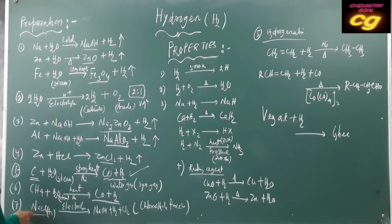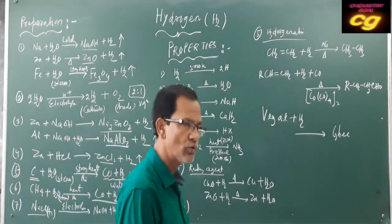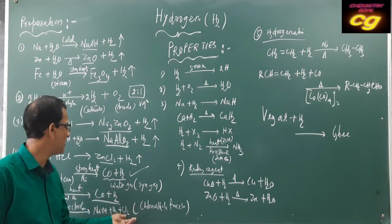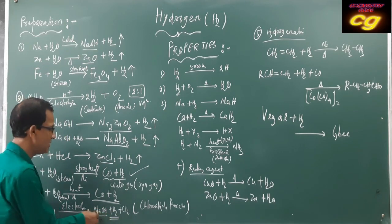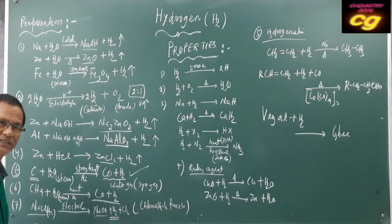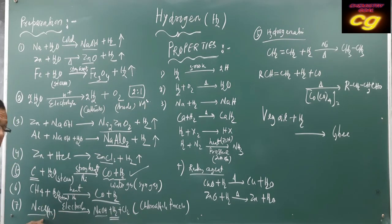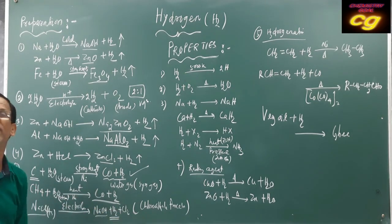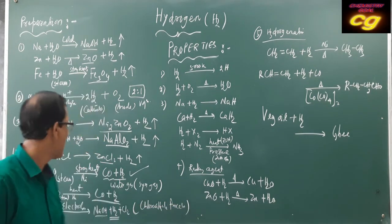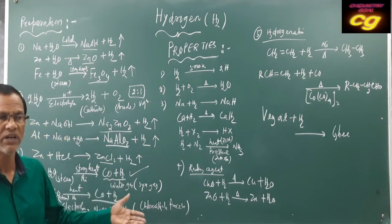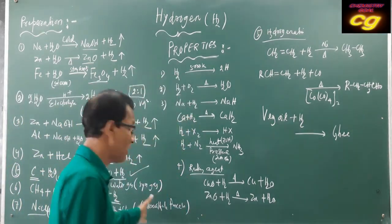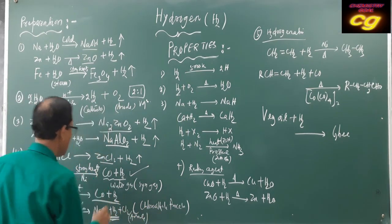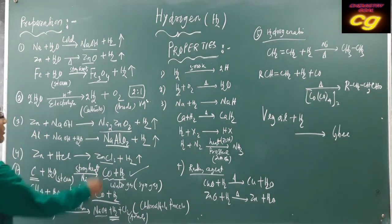Another important method is when aqueous sodium chloride solution undergoes electrolysis, it produces hydrogen gas. Along with hydrogen gas, chlorine gas is produced and the solution becomes alkaline as sodium hydroxide is formed. NaCl solution is neutral, but when it undergoes electrolysis it is converted to sodium hydroxide, making the medium alkaline. This is called the chloroalkali process. Chlorine is produced at the anode and hydrogen is produced at the cathode.